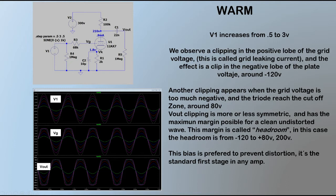Let's see a SPICE simulation of the warm bias. Let's start increasing the input signal from 0 volts to 3 or 4 to see how and when the clipping appears. V1 is a pure sinusoid wave but VG, that is the signal at the grid of the tube, we see a clip in the positive lobe. This is called grid leaking current and it's a characteristic of a triode. The negative cycle keeps very clean and has no distortion. Another clip appears when the input signal is negative enough to cut off the tube.